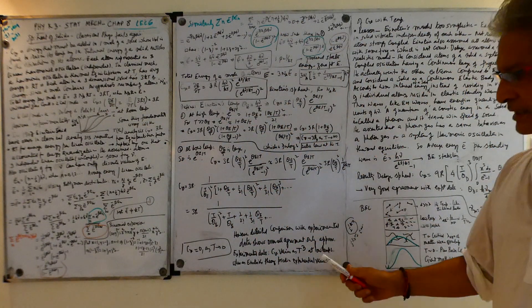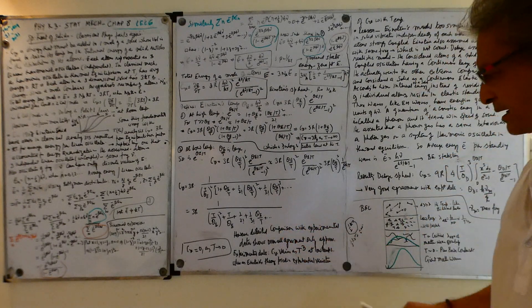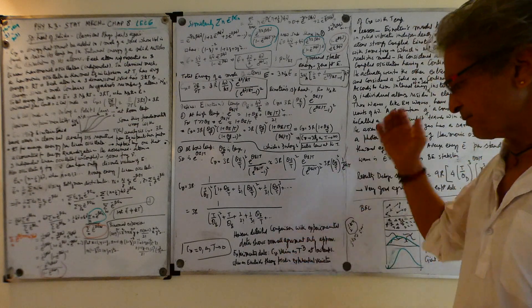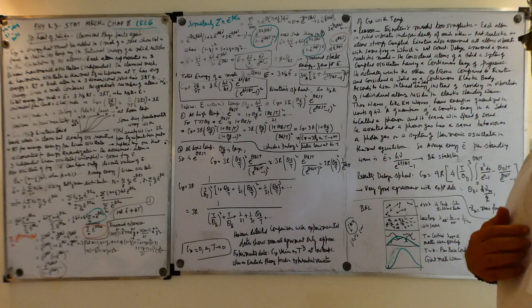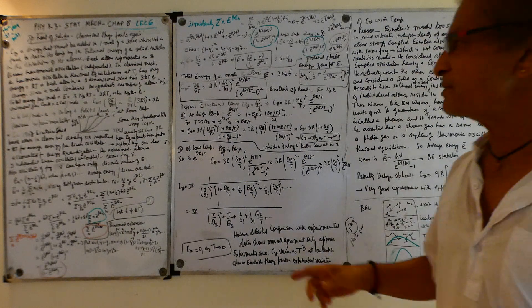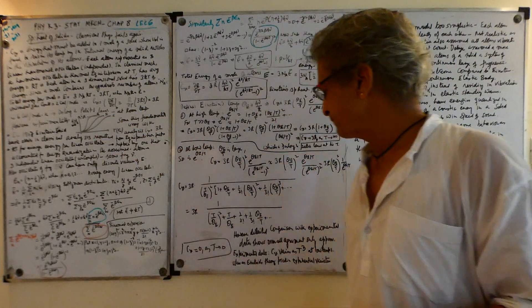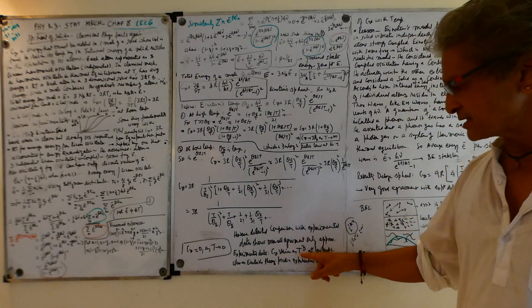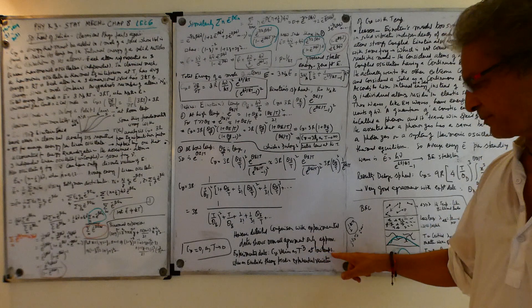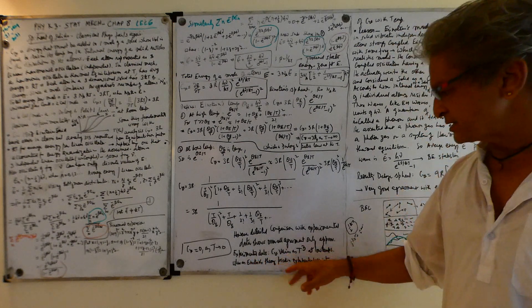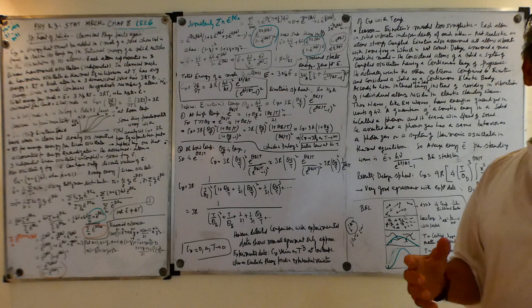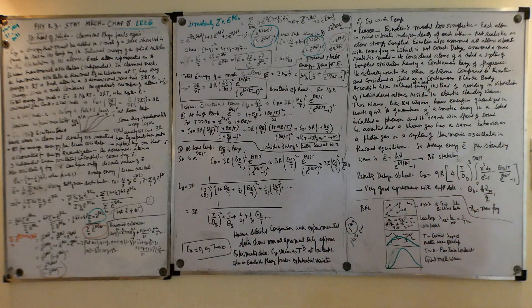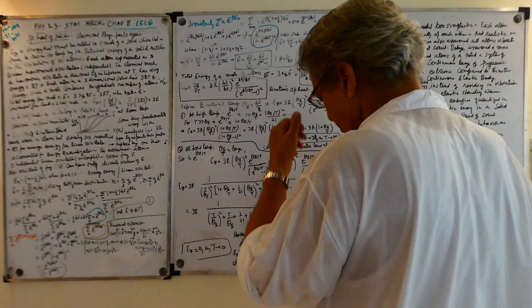So Einstein's specific heat matches the data at high and low temperatures. However, a careful detailed comparison with experimental data shows the overall agreement is only approximate. In between, there is some mismatch — experimentally, C_v varies as T³ at low temperatures, whereas Einstein's theory predicts an exponential variation.